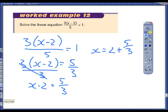Now if I add 2 to both sides it'll get x by itself and 2 plus 5 over 3 gives you an answer of 3 and 2 thirds.